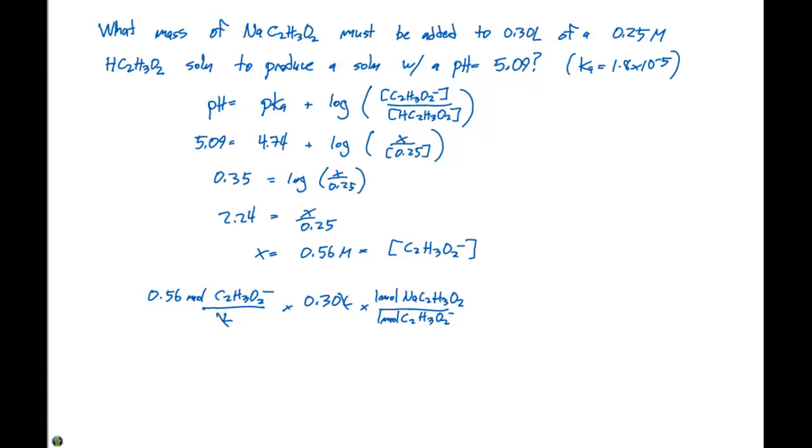And if we look at the periodic table, one mole of NaC2H3O2 is gonna be equal to 82.0 grams. And when we multiply all this out together, we get 13.78 grams, which is gonna be equal to, with two significant figures, 14 grams of NaC2H3O2.